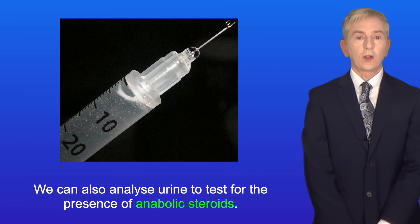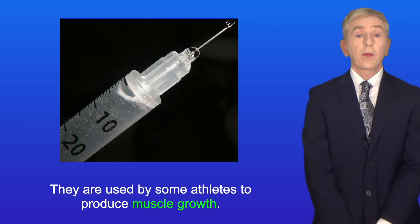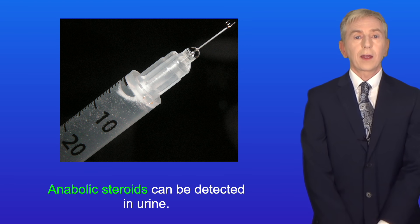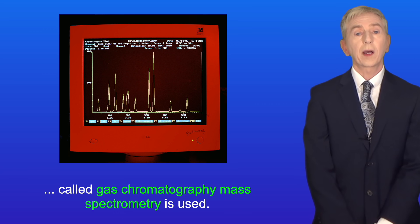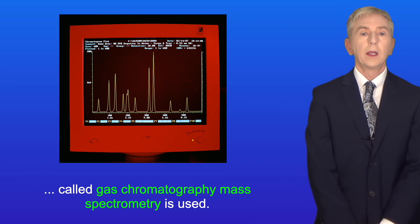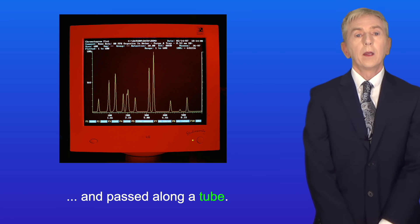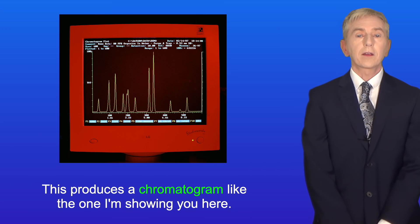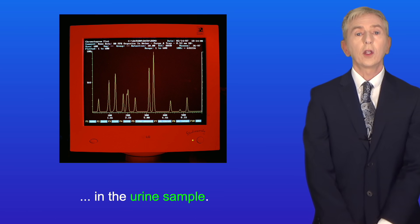Now we can also analyze urine to test for the presence of anabolic steroids. Anabolic steroids are based on the male hormone testosterone, and they're used by some athletes to produce muscle growth. Anabolic steroids can be detected in urine. To do this, a technique called gas chromatography mass spectrometry is used. In this technique, the urine sample is turned into a vapor and passed along a tube. Different substances move along the tube at different rates. This produces a chromatogram like the one I'm showing you here, and this can be used to show the presence of anabolic steroids in the urine sample.